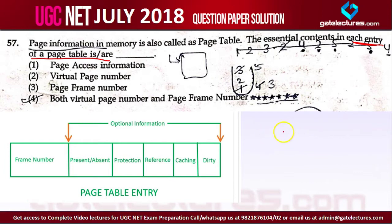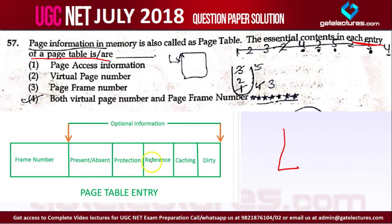In a page table, we have the frame number, and there are optional fields which you can have like protection bit, reference bit, or dirty bit. These are the optional entries. But one entry is essential, and that is the frame number.